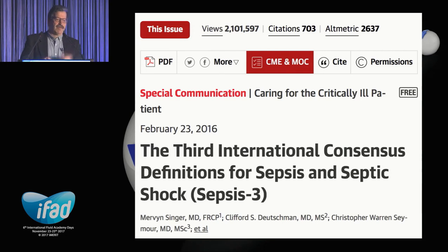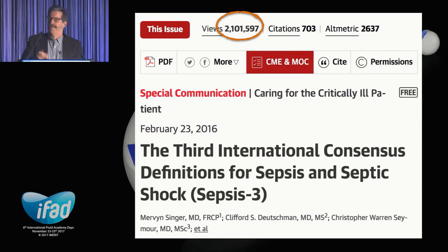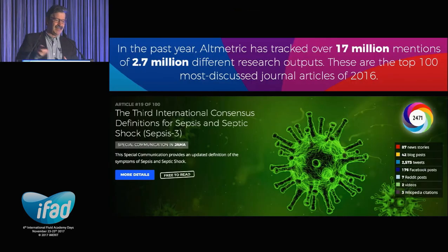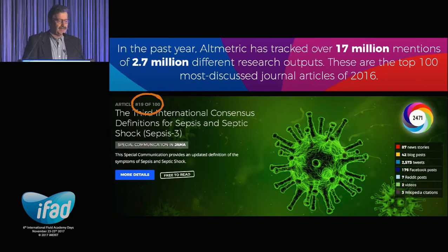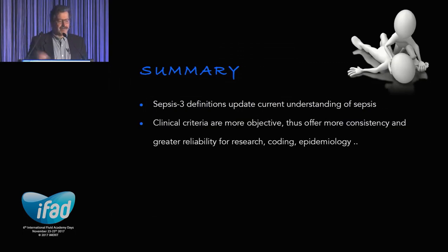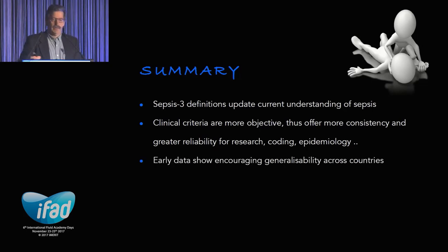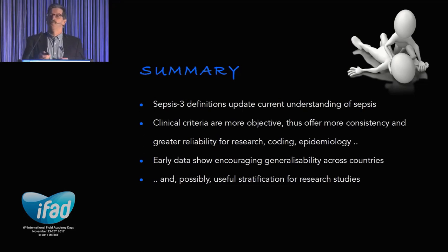The rolling ball is out there. Manu mentioned Altmetric scores of 2,600 and 2 million views of the paper. Last year it was the 19th most discussed scientific paper — both in the published and social media world — out of 2.7 million outputs. People are talking about it. Hopefully it's updated our understanding, we're giving more objective criteria and becoming more consistent. The early data are encouraging — we're seeing much more generalisability, and this may actually help research as well. Thank you very much indeed for listening.